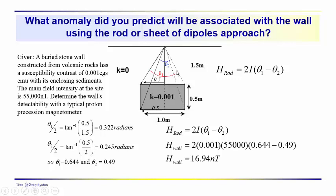The idea is to determine whether the wall can be detected using a proton procession magnetometer. To do this problem, we calculate theta 1 over 2 as the inverse tangent of 0.5 meters over 1.5 meters, the opposite over adjacent sides. Theta 2 over 2 is 0.5 over 2, the distance from the observation point down to the base of the wall. We get these two angles in radians: 0.322 and 0.245. These angles theta are then multiplied by 2, giving us theta 1 and theta 2 as 0.644 and 0.49.